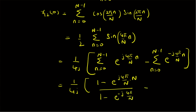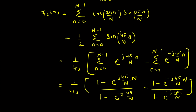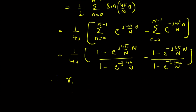Similarly, the second sum also evaluates using the geometric series formula. Clearly both numerators are 0 because e^(j4π) = 1, so 1 − e^(j4π) = 0. The same applies to the second fraction. So we have 0s, that is the product r12(0) is clearly equal to 0.